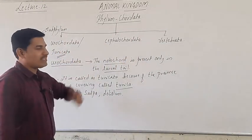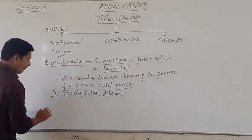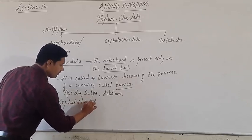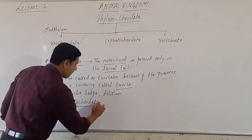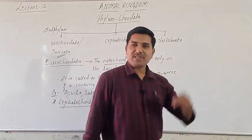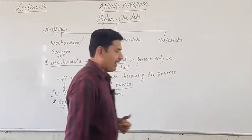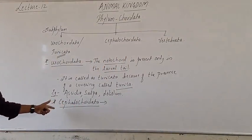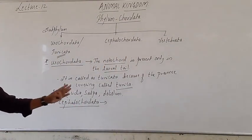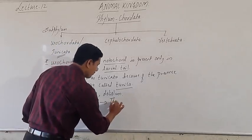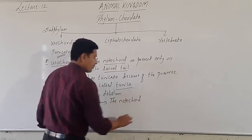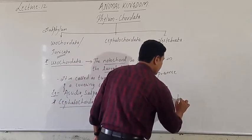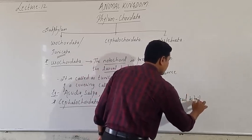Coming to the next part — Cephalochordata. As I told you, cephalo means head region. The notochord is present from the head to the tail region of these animals, and hence the name Cephalochordata. Cephalo refers to the head, so Cephalochordata means the notochord extends from head to tail.